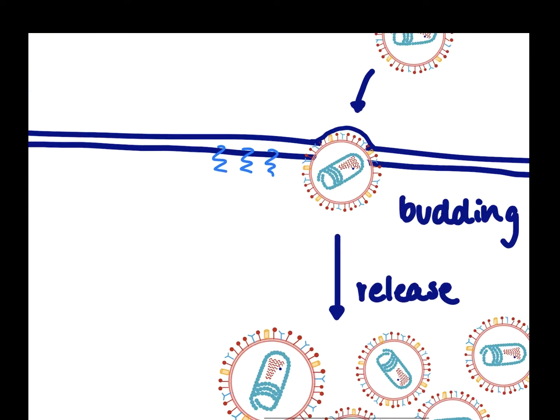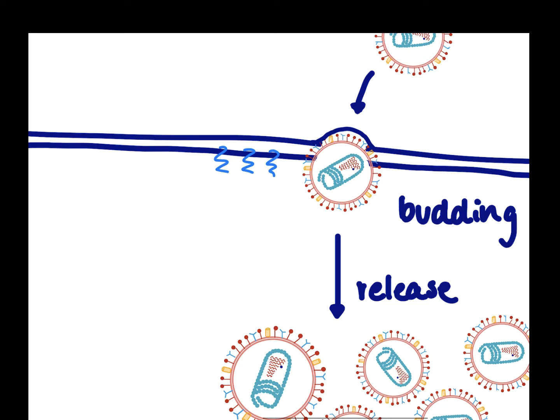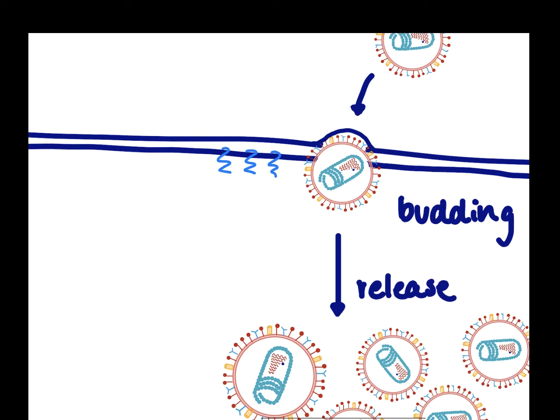Then the virus is assembled and needs to bud out of the cell. That's the way how influenza can produce a lot of baby viruses. But one problem that influenza needs to solve is how can it really bud out.